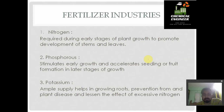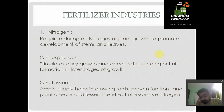In nitrogen fertilizers we have ammonia, nitric acid, and urea. These are the main types of nitrogen fertilizers. They are generally used by a plant during the early stages of plant growth to promote the development of stems and leaves.